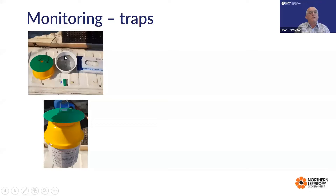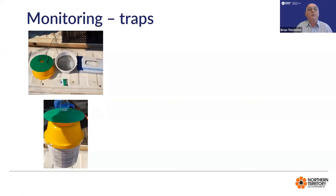Just before I give you the map of where it is, the monitoring tools we've been using are pheromone traps, and there will be a demonstration later on in this session of how to set up these traps. Basically they're called bucket traps. They've got two pieces: the bucket at the bottom traps the moths and there's a pheromone in the top. This mesh is an adaptation we use in the territory to stop the moths getting into the water if there's rain and collection of water in the bottom of the trap.